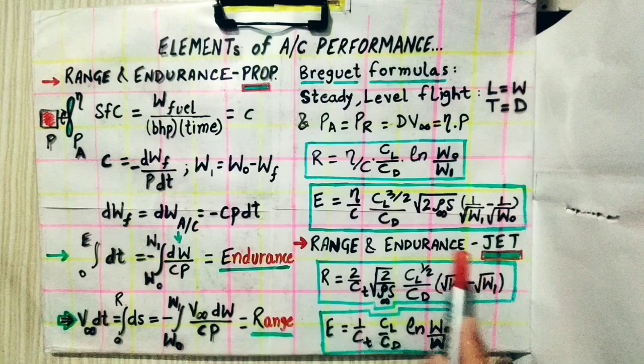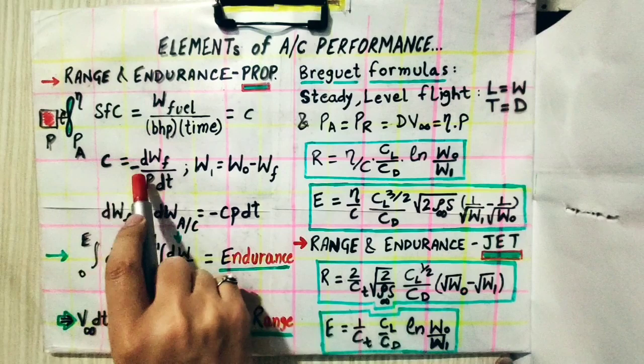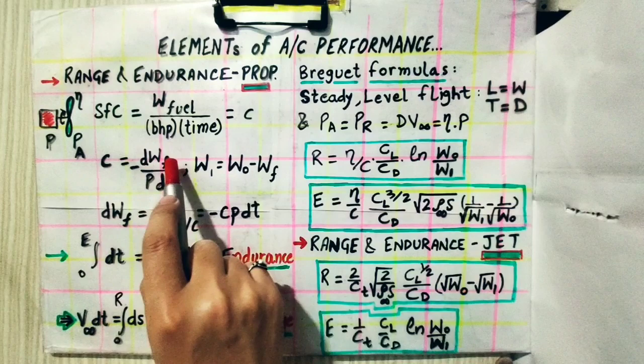The amount of fuel consumed per unit time to produce unit power is given by C, the specific fuel consumption. The SFC formula shows that minus dW_fuel — the change in weight of fuel — is used, since fuel weight decreases as the aircraft flies.